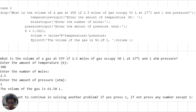In the second problem of physical chemistry, the first step is to input the temperature, number of moles, and pressure using the input function. We then use the ideal gas law equation, which includes the universal gas constant, to calculate the volume. Finally, we use the fprintf function to display the answer. If the user wishes to solve another problem, they can press 1 and the program will run again, otherwise it will end.